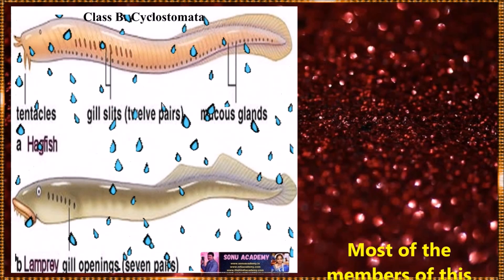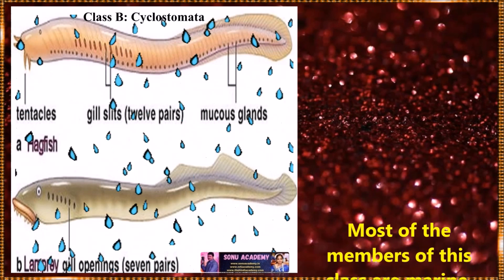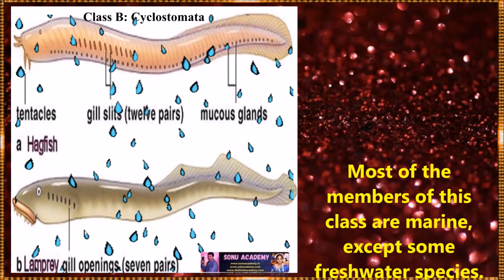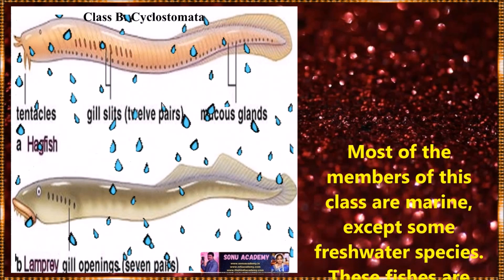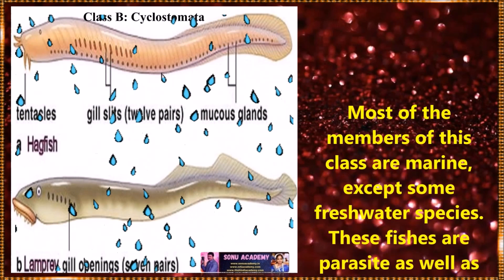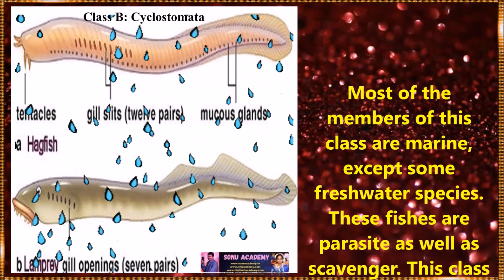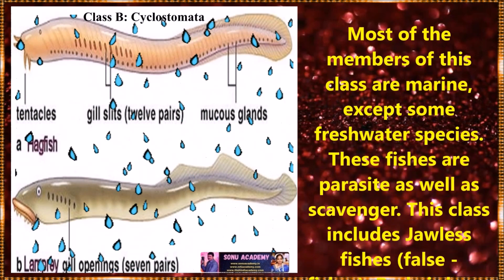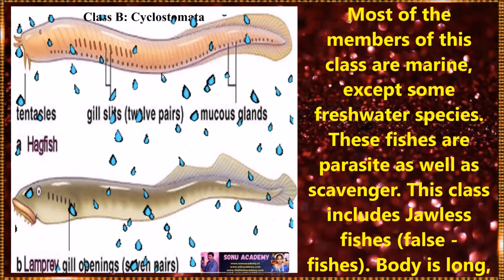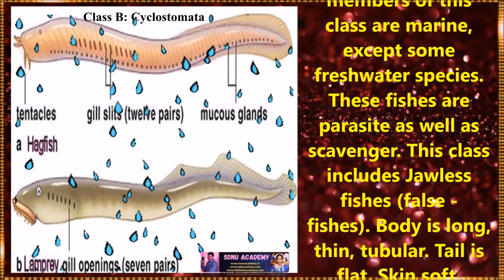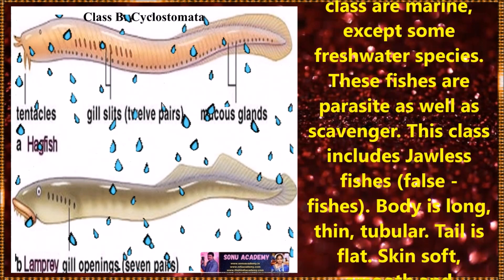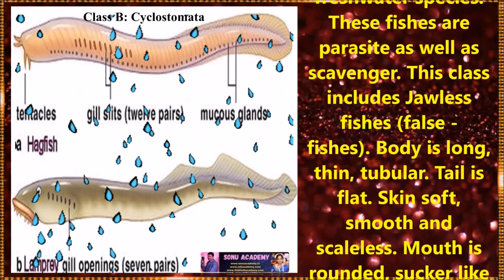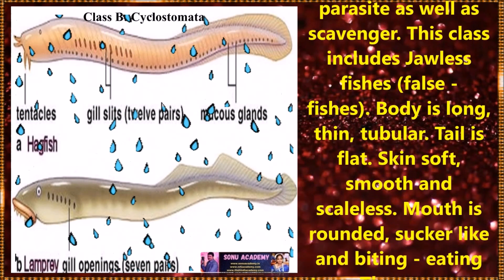Now let us discuss the class Cyclostomata. Most of the members of this class are marine, except some freshwater species. These fishes are parasites as well as scavengers. This class includes jawless fishes. The body is long, thin, and tubular, and the tail is flat.